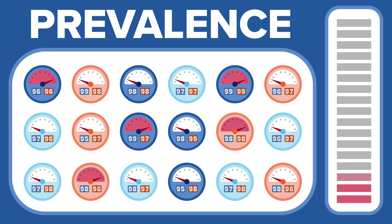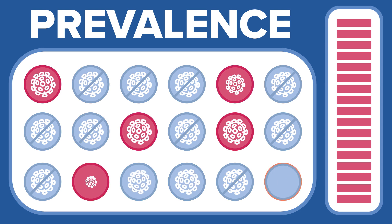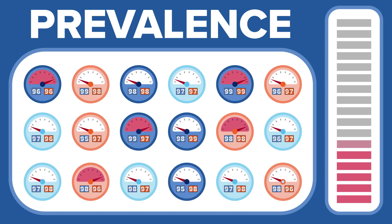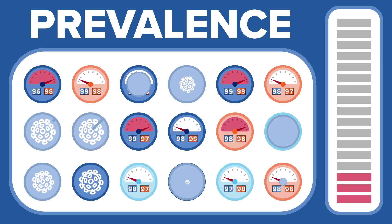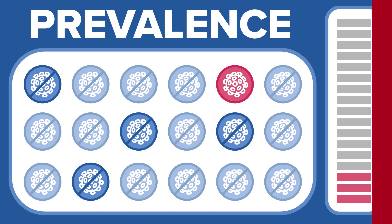If the underlying chance that you are infected is high, then a positive test result is more likely to be right and indicate previous infection. On the other hand, if the underlying chance that you are infected is really low, then a positive test result might very well just be a false positive.